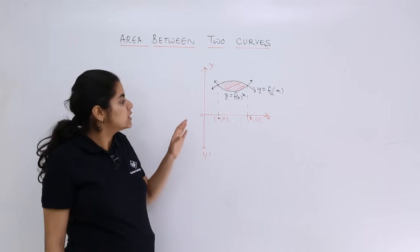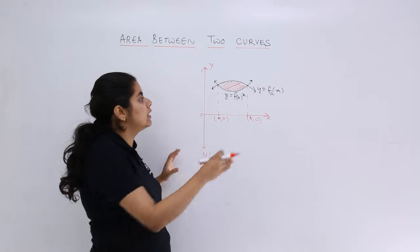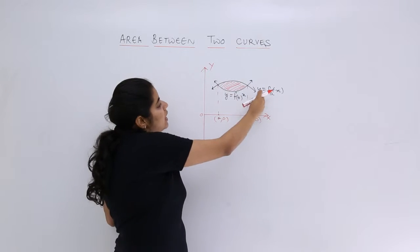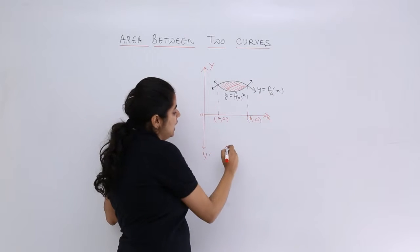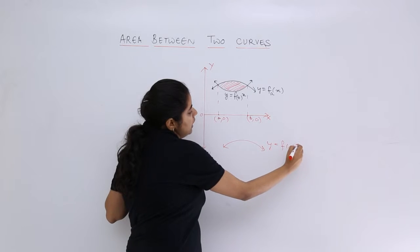For that purpose, I suggest you see these curves individually. Don't think that we have two curves in one figure; think of them separately. Now y equals f of ax has somewhat this figure.